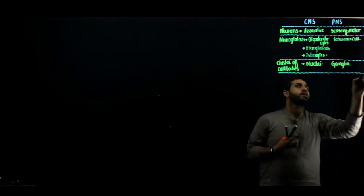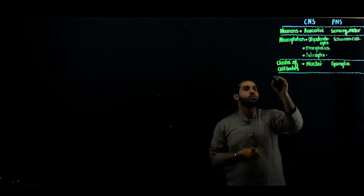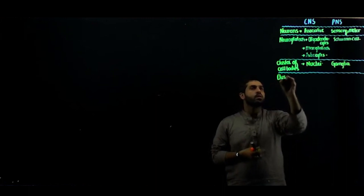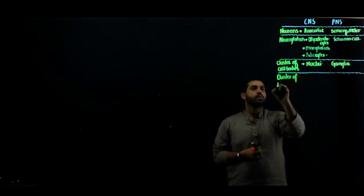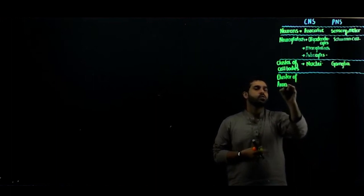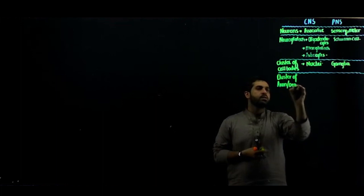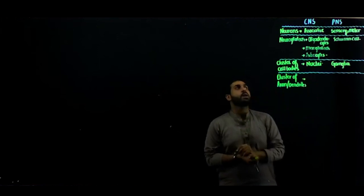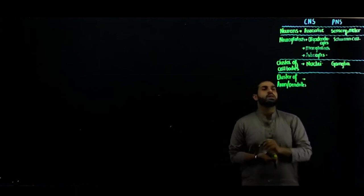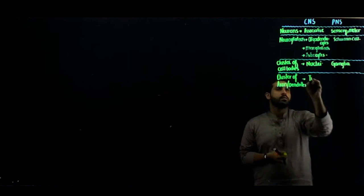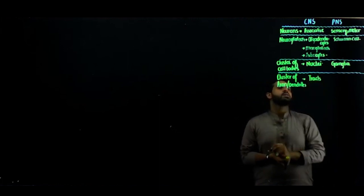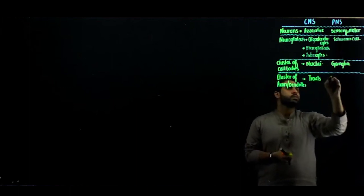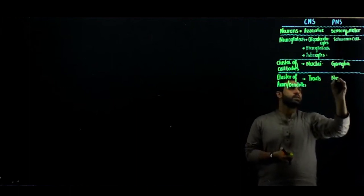Here are clusters of axons and dendrites. If you have these clusters in CNS, we call them 'tracts.' But if these clusters are in PNS, we call them 'nerves.'